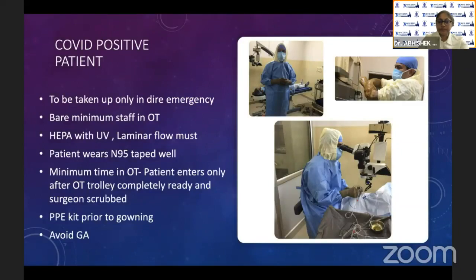If the patient is COVID-positive, they should only be taken to the OT in a dire emergency. Bare minimum staff must be in the OT. A HEPA filter with UV and laminar flow is a must. The patient should also be wearing an N95 mask, which is taped, and they should spend minimum time in the OT. This can be ensured by keeping the OT trolley ready and having the surgeon scrub when the patient is being shifted.